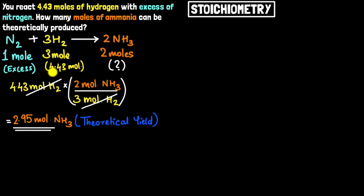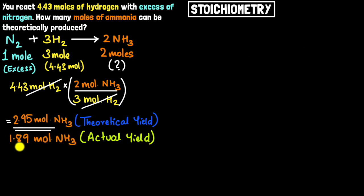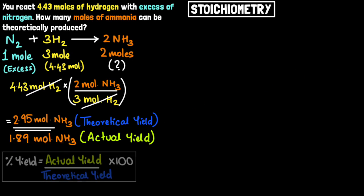There are a few reasons why actual yield differs. One is that not all 4.43 moles of hydrogen would necessarily react with nitrogen — there could be leftover hydrogen, so incomplete reaction is one reason. Another reason could be impurities in the hydrogen gas, meaning you actually had less than 4.43 moles of pure hydrogen and therefore got less ammonia. So the actual yield you get in the lab could be quite different. For example, let's say you perform this in the lab and get an actual yield of 1.89 moles of ammonia.